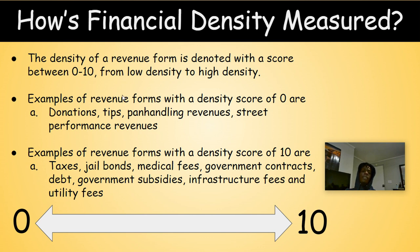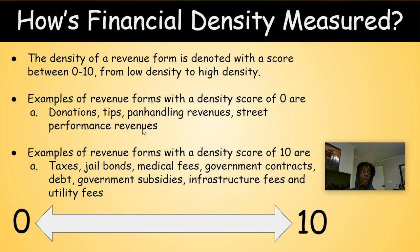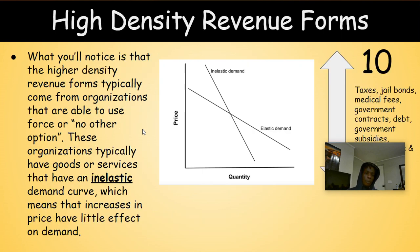Examples of revenue forms with a density score of ten are taxes, jail bonds, medical fees, government contracts, debt, government subsidies, infrastructure fees, and utility fees. Just because one side has a lesser density score doesn't mean one company can't make more in donations than another does in medical fees. The analogy here is like the classic question: what weighs more, 100 pounds of feathers or 100 pounds of iron? They weigh the same, but in terms of density, 100 pounds of iron could fit in one hand while 100 pounds of feathers might take up an entire room.